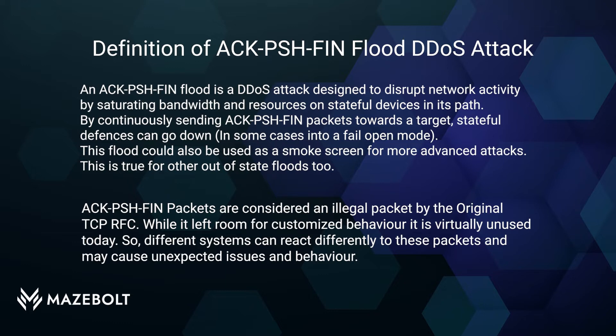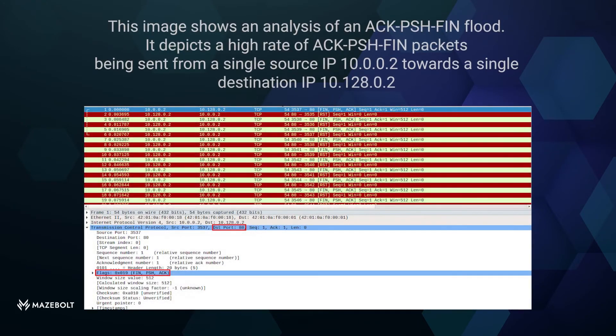Different systems can react differently to these packets and may cause unexpected issues in behavior. This image shows an analysis of an ACK/PUSH/FIN flood, depicting a high rate of ACK/PUSH/FIN packets being sent from a single source IP 10.0.0.2 towards a single destination IP 10.128.0.2.